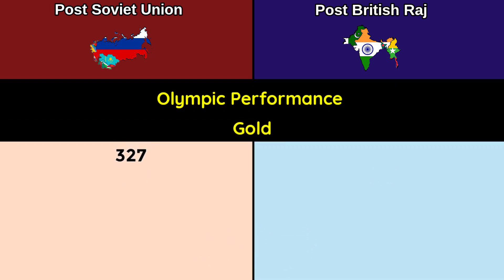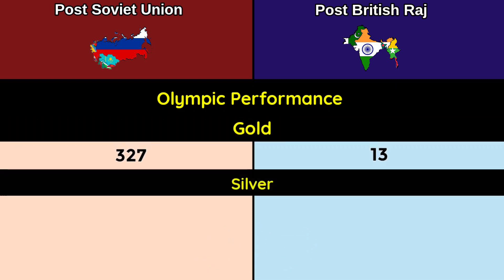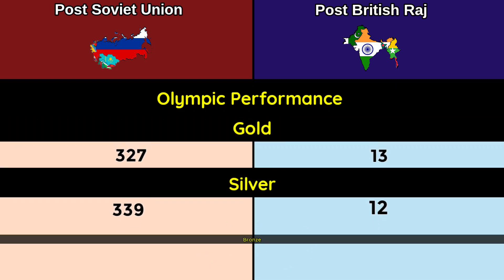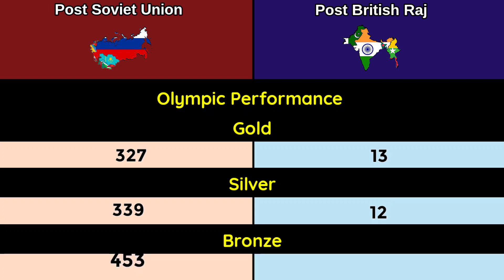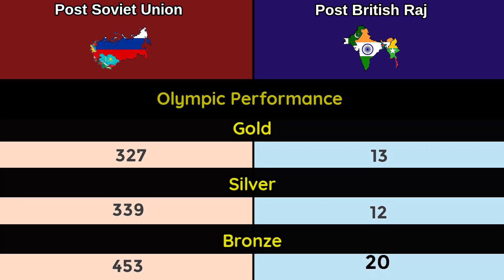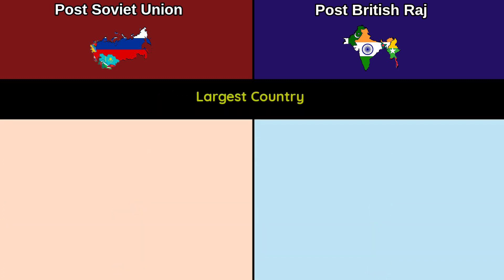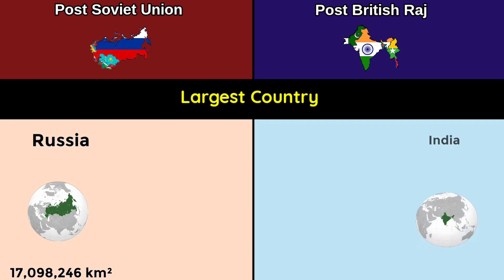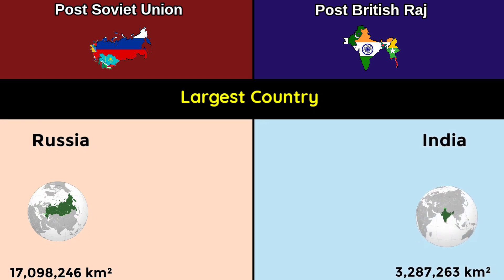Olympic performance — Total Olympic medals: 1,119 versus 45. Gold: 327 versus 13. Silver: 339 versus 12. Bronze: 453 versus 20. Largest country: Russia at more than 17 million km² versus India at 3.28 million km².